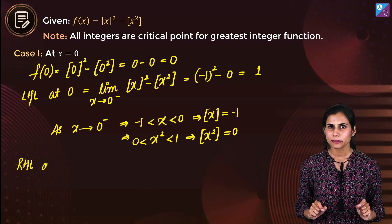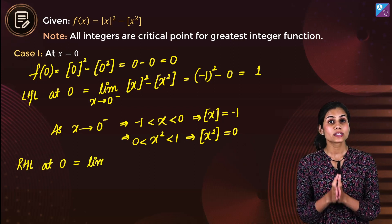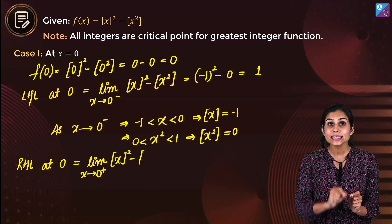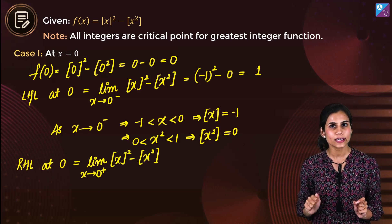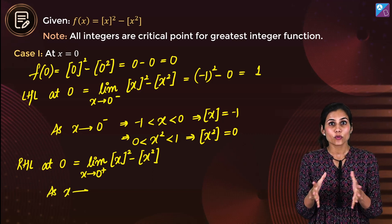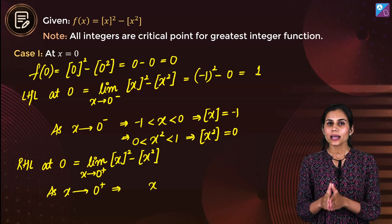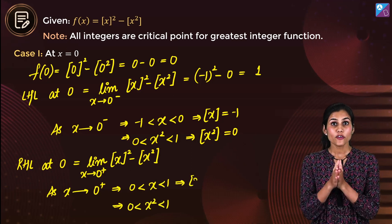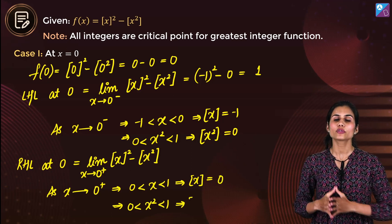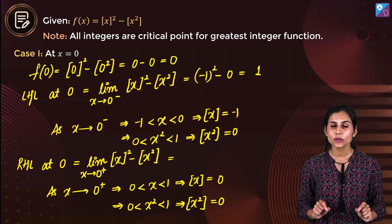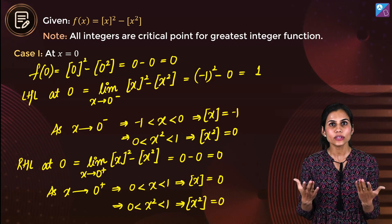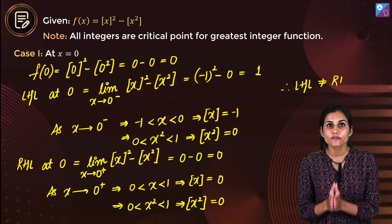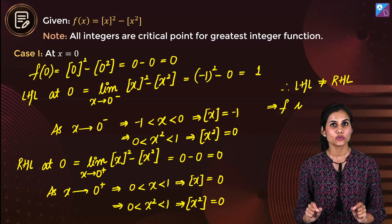What about the right hand limit at 0? If x approaches 0 from the right, x is very close to 0 but positive — strictly sandwiched between 0 and 1. This implies x² is also sandwiched between 0 and 1. So GIF(x) = 0 and GIF(x²) = 0. The right hand limit comes out to be 0 − 0, that is 0. Obviously LHL ≠ RHL, which means this function is not continuous at 0.